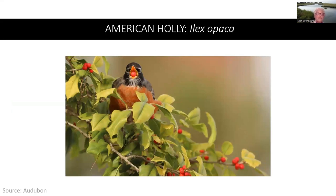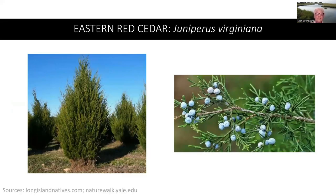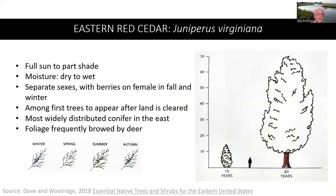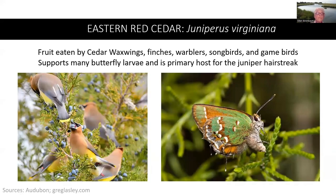The American holly is also an excellent choice for winter berries. The eastern red cedar is the most widely distributed conifer in the east and is an important plant for wildlife, providing good nesting and roosting cover for many species of birds as well as cover for mammals. There are separate sexes, with berries on the female plant in fall and winter. It is among the first trees to appear after land is cleared. The fruit is eaten by cedar waxwings, finches, warblers, songbirds, and game birds. It supports many butterfly larvae and is the primary host for the juniper hairstreak.